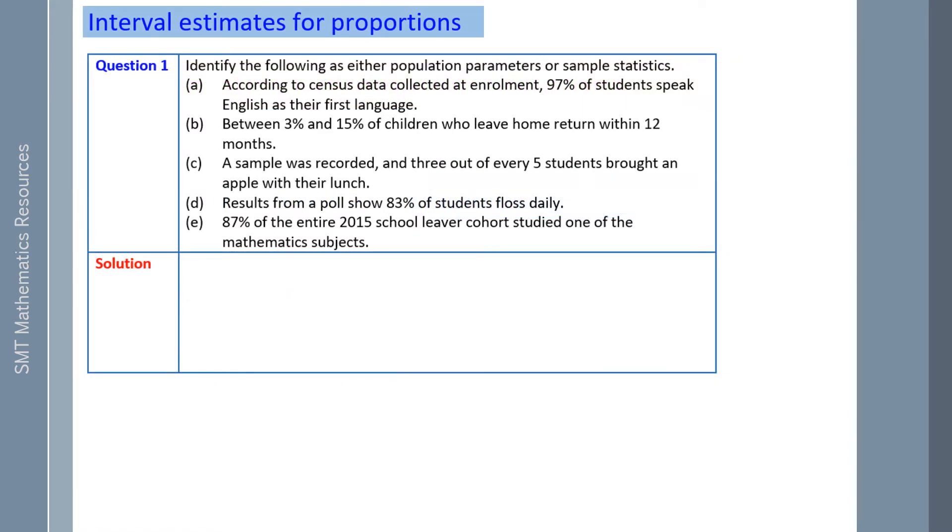Question 1: We're going to identify the following instances as either a population parameter or a sample statistic. A: According to census data, which is an important word, collected at enrolment, 97% of students speak English as their first language. That would be a population parameter because we're talking about the entire population.